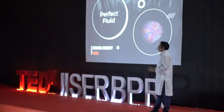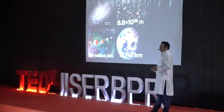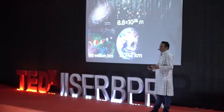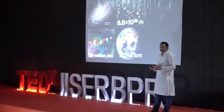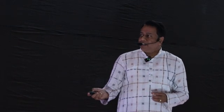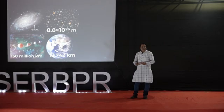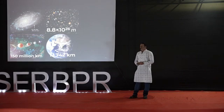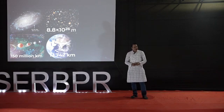Let me start with our planet Earth. It's perhaps the only habitable planet known in our universe. It has a diameter of 12,742 kilometers and is the third planet in our solar system. The solar system itself is very huge — it has a span of 150 million kilometers. Our solar system is part of a galaxy called the Milky Way.